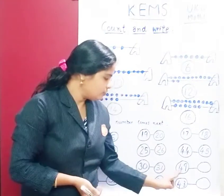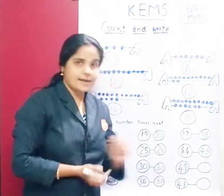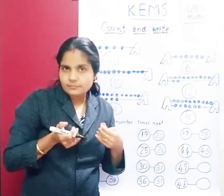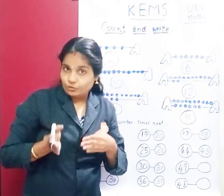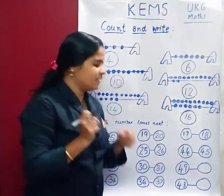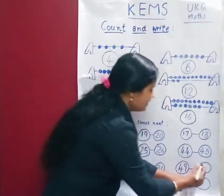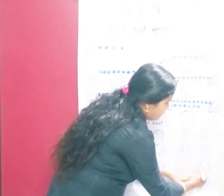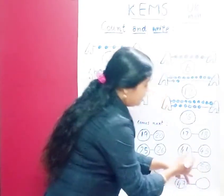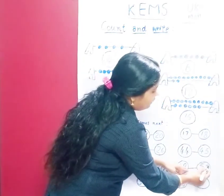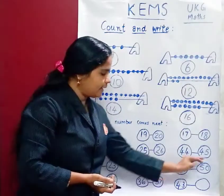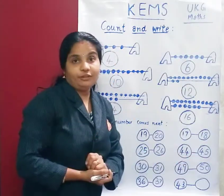Then 49. After 49 is 50. That's very good, children. 50 — write 5, 0. 49, 50.